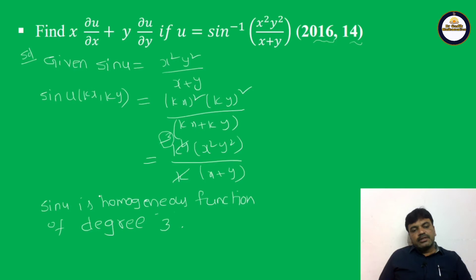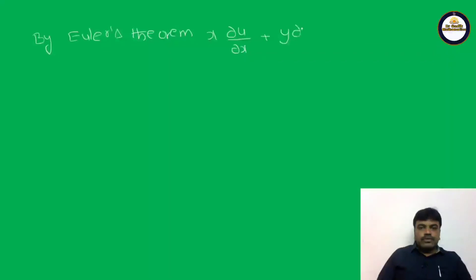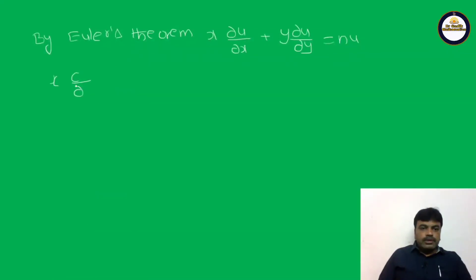We can apply Euler's theorem here. By Euler's theorem: x·∂u/∂x + y·∂u/∂y = n·u, where u here means sin u, so n·u = 3·sin u.